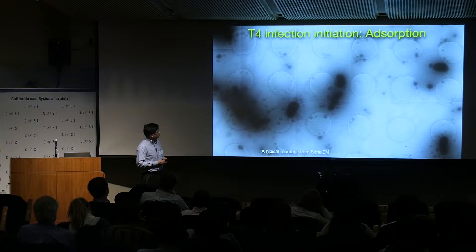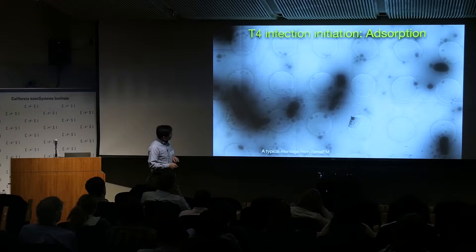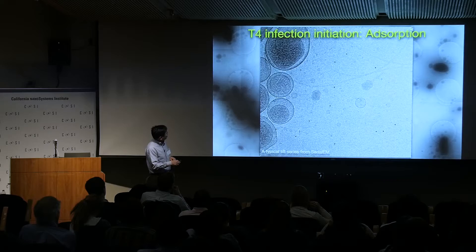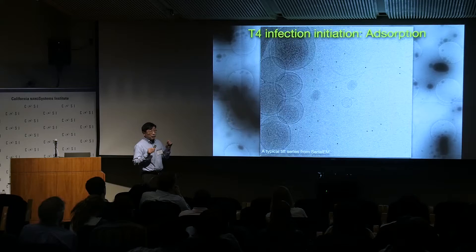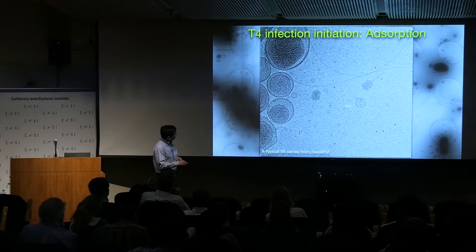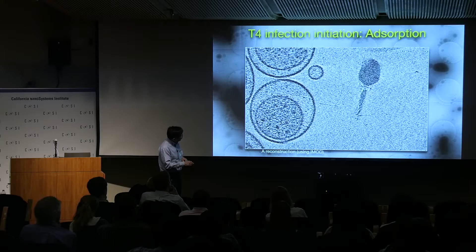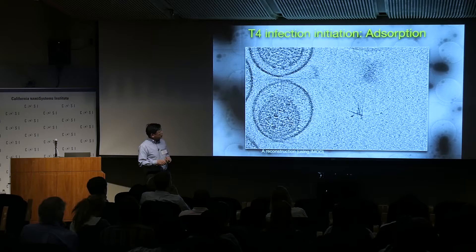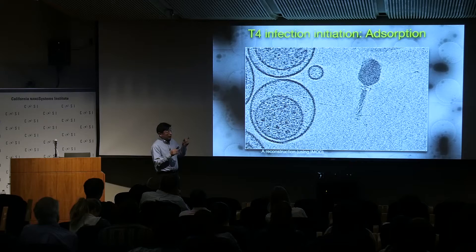Starting with T4 infection — this is a typical micrograph showing regular big cells and some mini-cells. Using cryo-EM, we collected tomograms from this tilt series. You can see T4 starting to interact with mini-cells. At this early stage with brief incubation, you can barely see the interaction. By tomographic reconstruction, you can start to see a capsid with a contracted tail, and a lot of fibers reaching out to attach to the host membrane.